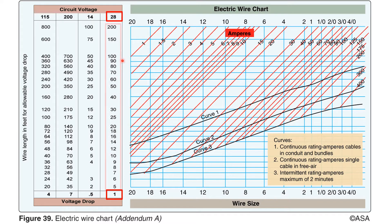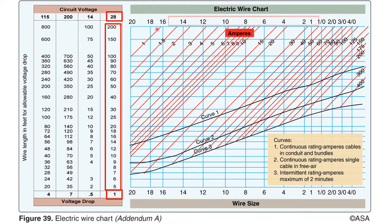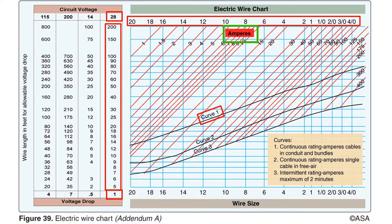The numbers running vertically in this column are for wire length in feet. The numbers across the top of this chart are wire gauges, with the larger numbers representing the smaller gauges. The red diagonal lines represent current flows in amperes. Curve 1 represents wires that are run in a bundle with other wires or through a conduit. Because the heat generated by wires run in bundles or conduit cannot dissipate as readily, a heavier gauge wire is often required. Curve 2 represents wires that are run singly in free air, which dissipate heat more readily, so a smaller gauge wire can oftentimes be utilized.